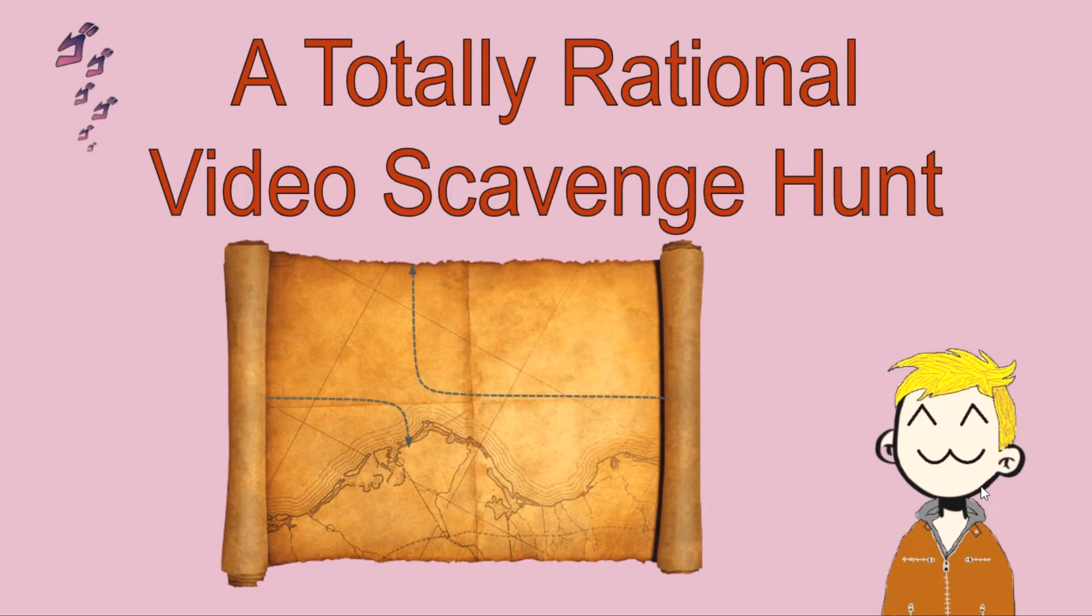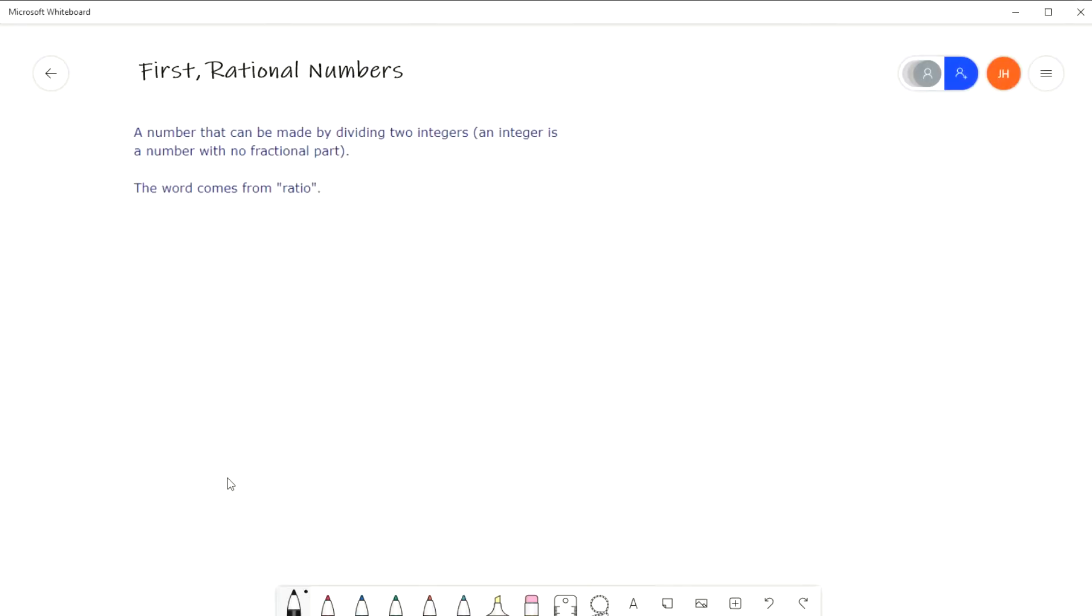So to get ourselves started, the thing that I want to do is look into what are rational numbers. What does it mean to be a rational number? So first of all, a rational number is any number that can be made by dividing two integers. Remember guys, an integer is just a whole number.